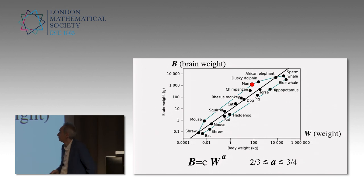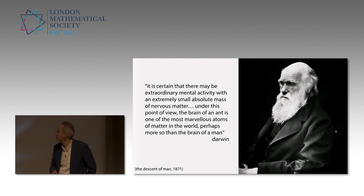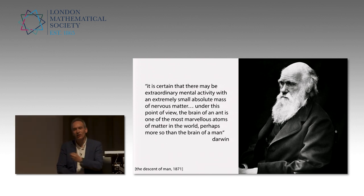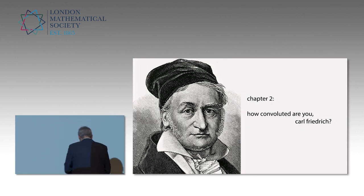Again, nothing comes clear about what's exceptional about the brain in terms of weight with respect to other animals. And indeed, let's turn to the wisdom of Charles Darwin and his beautiful writing. He said, it is certain that there may be extraordinary mental activity with an extremely small absolute mass of nervous matter. Under this point of view, the brain of an ant is one of the most marvelous atoms of matter in the world, perhaps more so than the brain of a man.